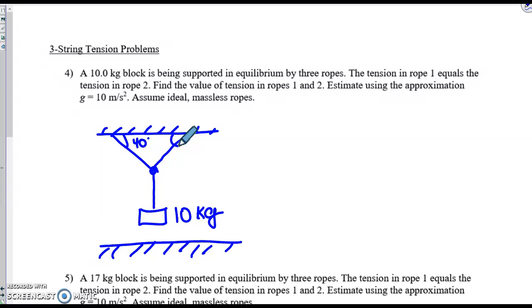The block is supported in equilibrium by these three ropes. The tension in rope 1 equals the tension in rope 2. So rope 1 is this on the left, rope 2 is this. We'll call this one rope 3. Estimate using the approximation that g is 10, and what do we have to find? We have to find the value of tension in ropes 1 and 2.